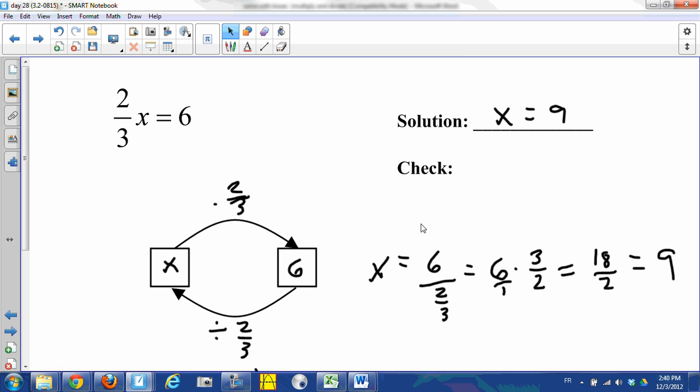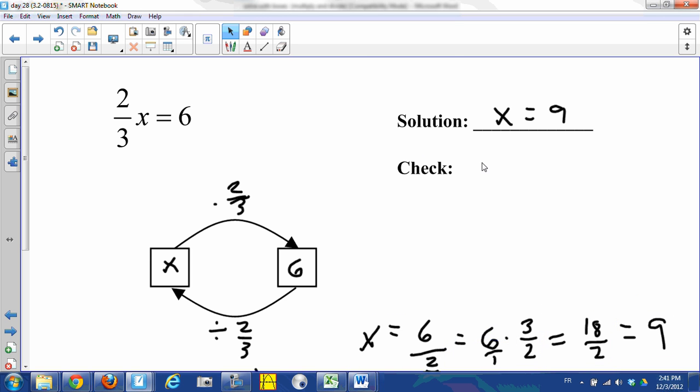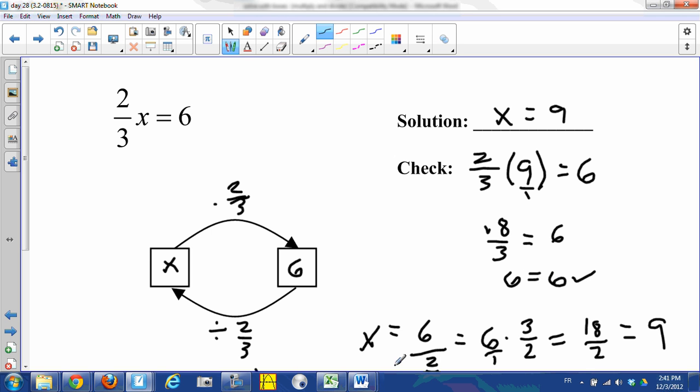Now I'm going to move this down so I'll have more room for my check. Okay, so we're taking two-thirds and multiplying it by our solution, and we're supposed to get six. Our solution was nine. Two-thirds times nine should equal six. Think of that as 9/1. Two times nine is eighteen, three times one is three. Eighteen-thirds, well yep, that's six. All right, so we found the correct solution.